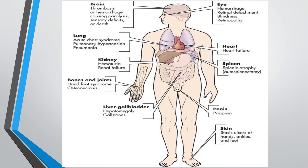The slide summarizes complications in children with sickle cell disease from head to toe. In the brain: stroke. In the eye: retinal vessel occlusion. In the heart: heart failure. The spleen: splenic atrophy, otherwise called autosplenectomy — another important MCQ point. In the penis: priapism. Skin: dactylitis and ulcers. Liver and gallbladder: gallstones. Bones and joints: Hand-foot syndrome and osteonecrosis. In the kidney: renal failure and hematuria. In the lung: acute chest syndrome and pneumonia.